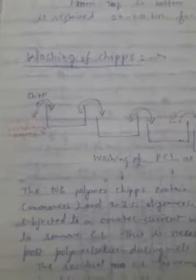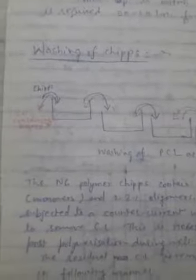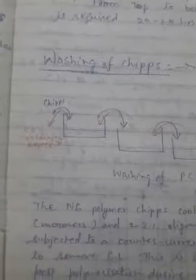Before the chips go for drying and final spinning, the unconverted caprolactam mass must be removed. For this, a counter-current multi-stage washing process — using more than one, say four or five washing tanks — is used.